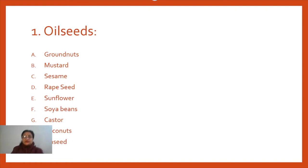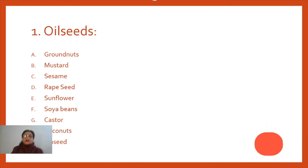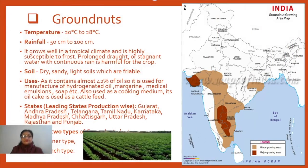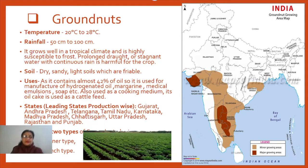Now let us start with the two main oil seeds we need to discuss — the ones you are going to have in your board exams. You have to cover the study of these two oil seeds: one is groundnut and the other is mustard. Groundnut, as we call it in Hindi 'moongfali', is also called peanut or monkey nut at several places.